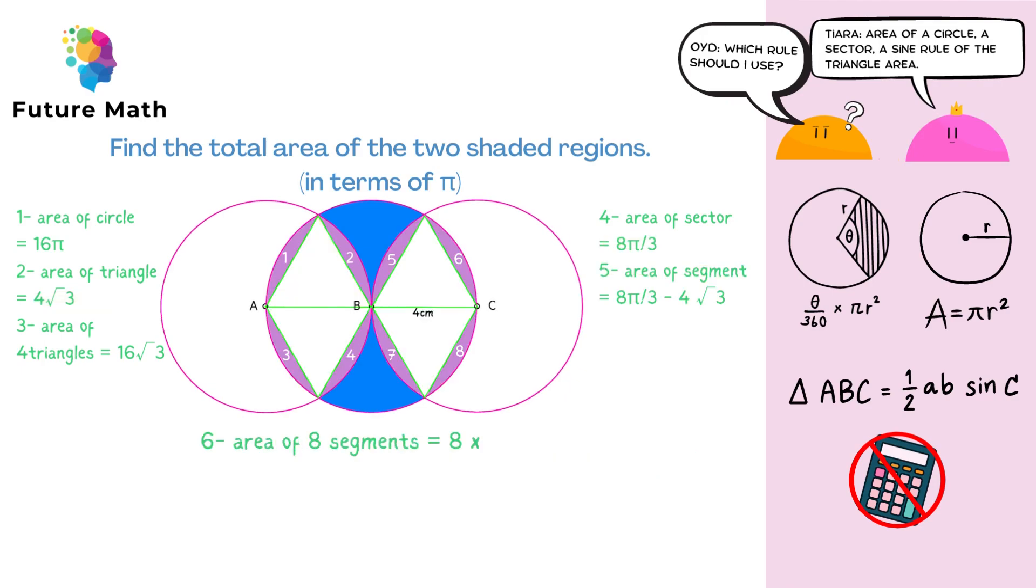Step number 6 is to multiply the area of one segment by 8, and this comes out as 64 pi over 3 minus 32 root 3.